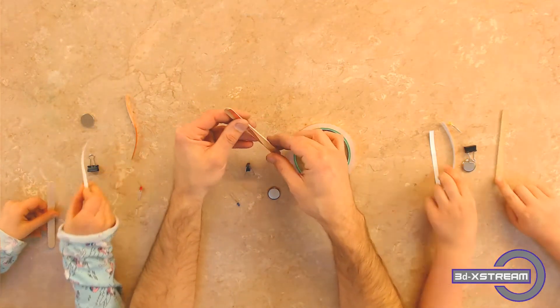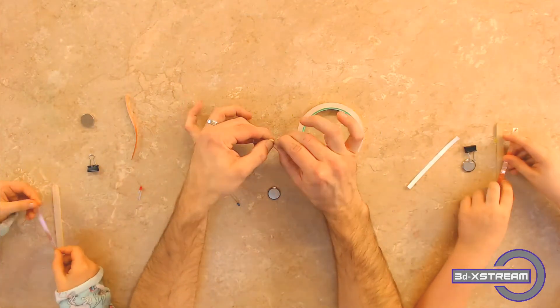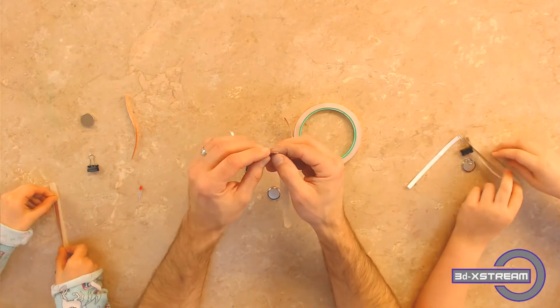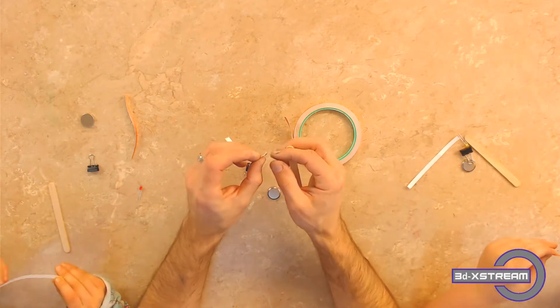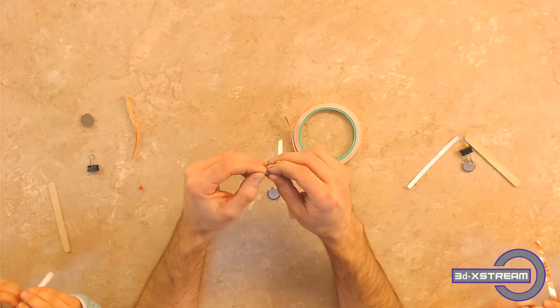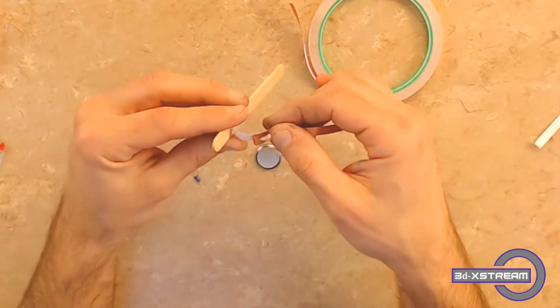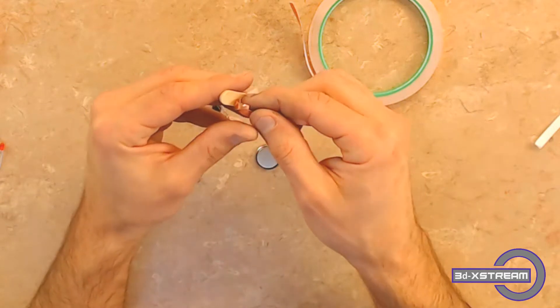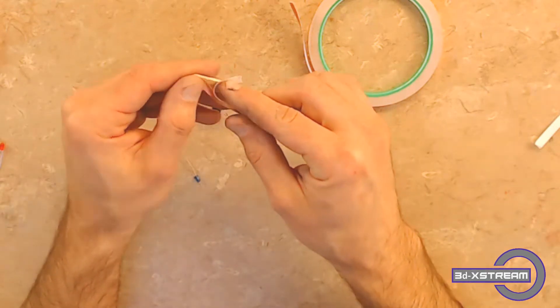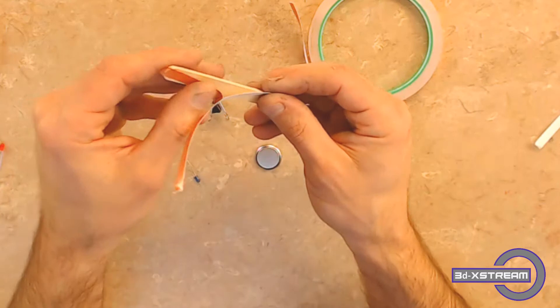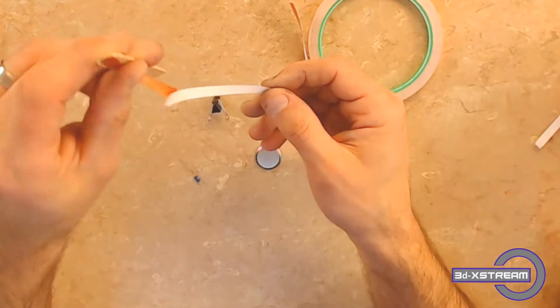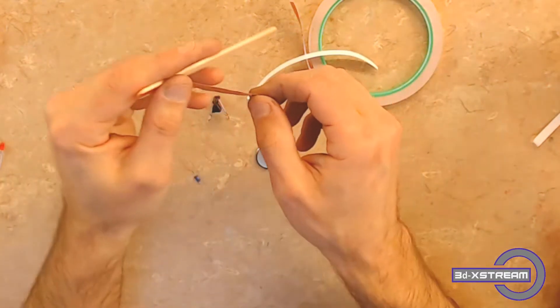You want the copper tape to be as long as the popsicle stick. We're going to peel the white backing off the tape and be very careful. What you want to do is pull one edge up, then put one edge on the popsicle stick before you pull all the backing off, and follow it down with your finger.